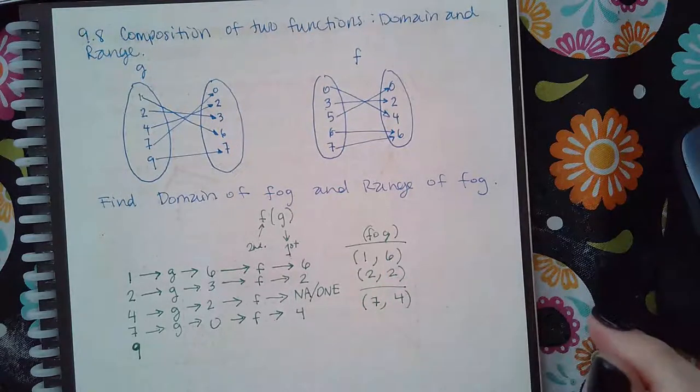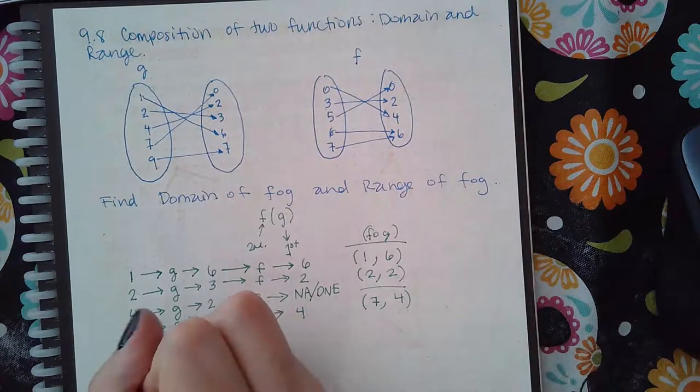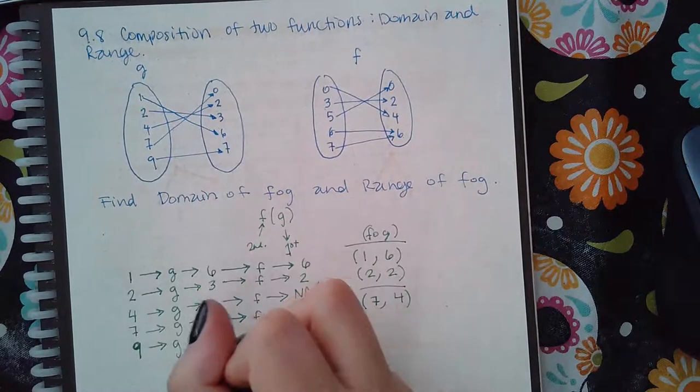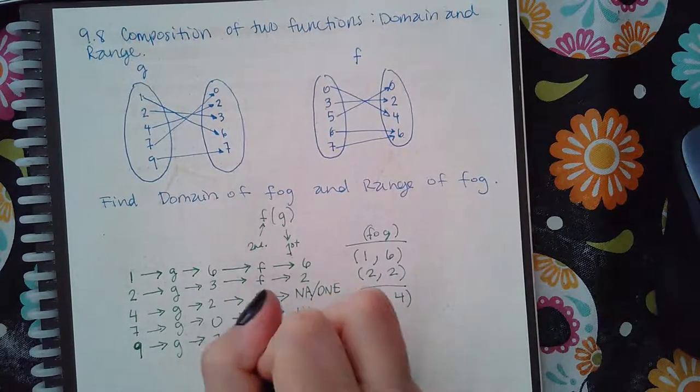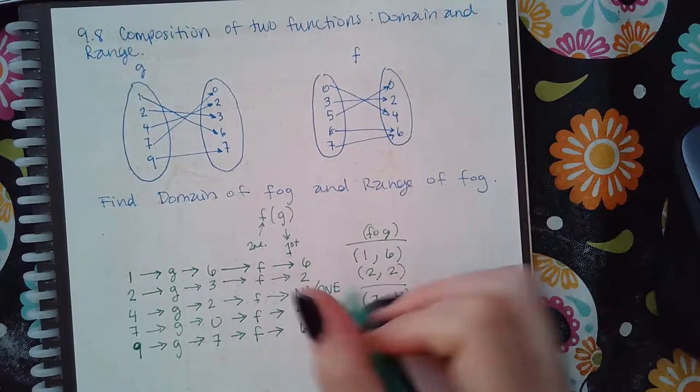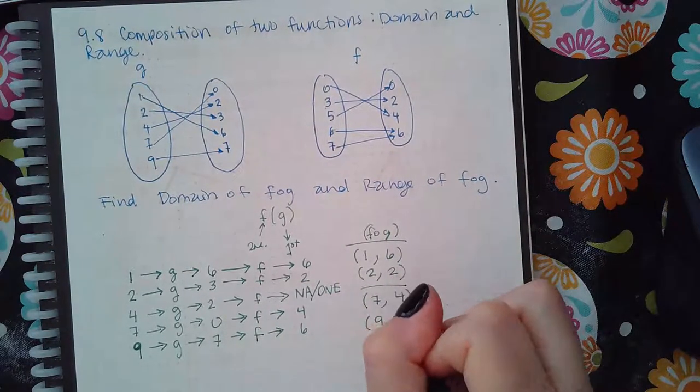Now we move on to nine. So when we plug nine into g we get seven, and when we plug seven into f we get six. So nine was the input to begin with and six was the final output.